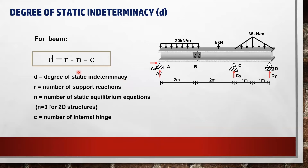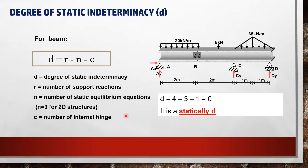We can determine the degree of static determinacy of a beam using the equation D = R − N − C, where D denotes the degree of static indeterminacy, R is the number of support reactions, N is the number of static equilibrium equations (N = 3 for 2D structures), and C is the number of internal hinges. It is found that this beam is statically determinate.